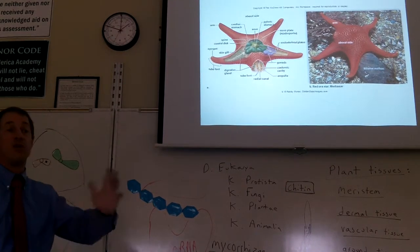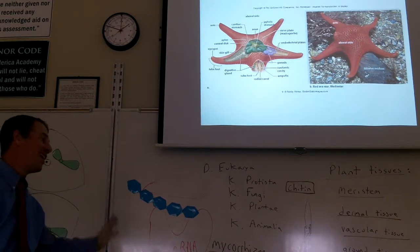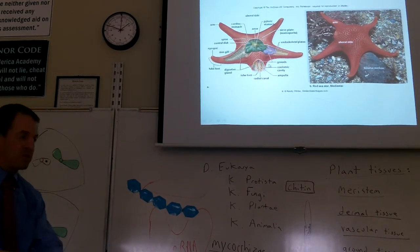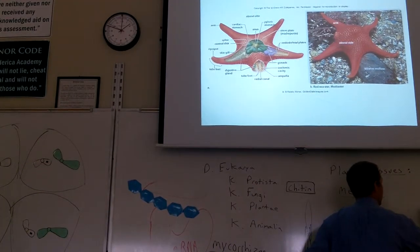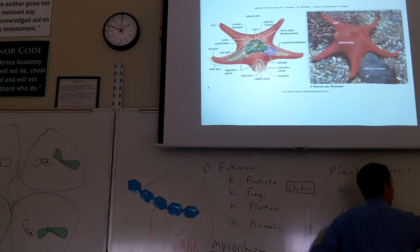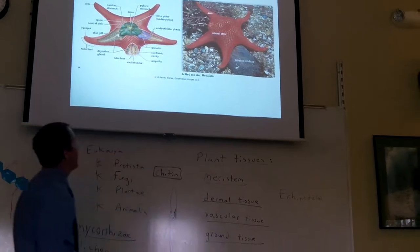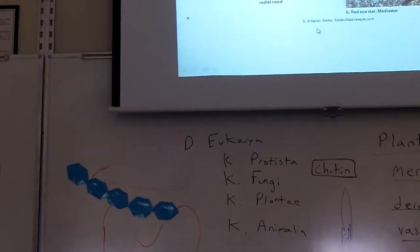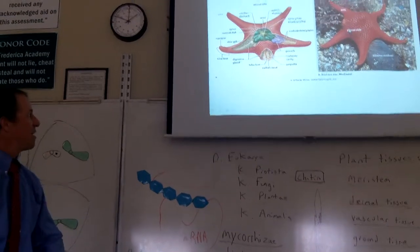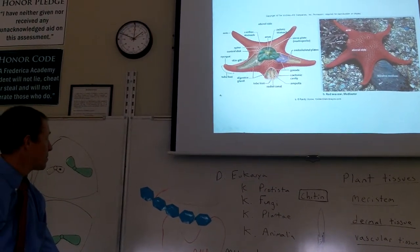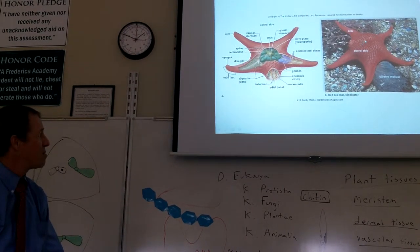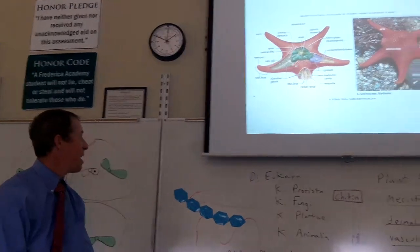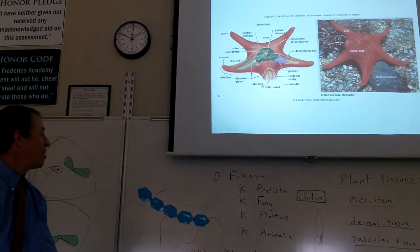Finally, we're now up to the deuterostomes, and these formed anus first, not like the mouth first of everything else we just studied, but the starfish, they're called echinoderms. It means spiny skin. Because if you look up close at starfish and their relatives, which are sea urchins, they've got little spines on their skin. Sometimes the spines are just little bumps like this that one has, but sometimes they're points like a sea urchin has, and it can stick to it.